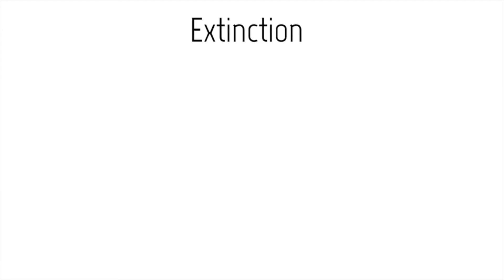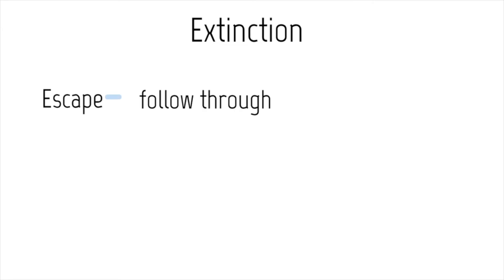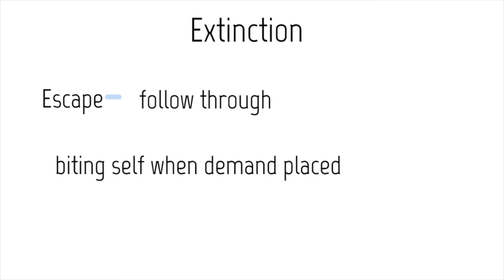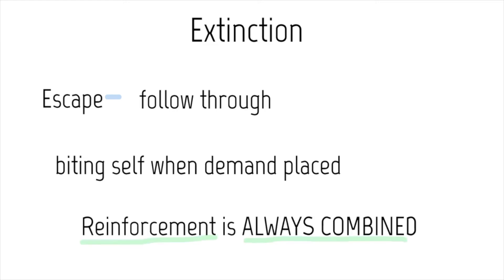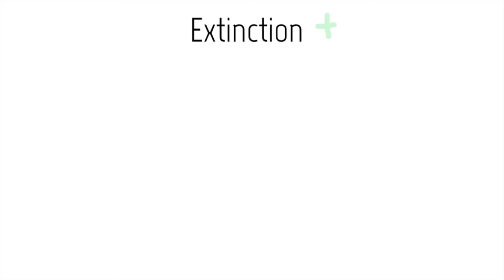Starting with escape-maintained behavior: if a behavior is escape-maintained and we're placing it on extinction, the learner will not be allowed to escape the situation — instead, we follow through. For example, Jay engages in self-biting when a demand is placed, like when a worksheet is put in front of him. To place this on extinction, someone would follow through. It's important to note that reinforcement is always combined with extinction — we would definitely want to have a reinforcement system in place. In this example, following through is the extinction piece.